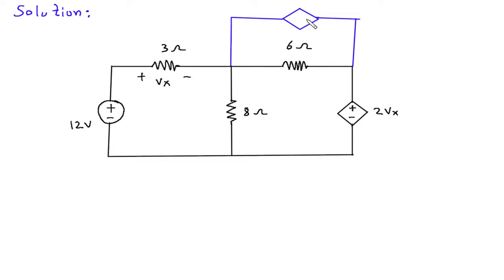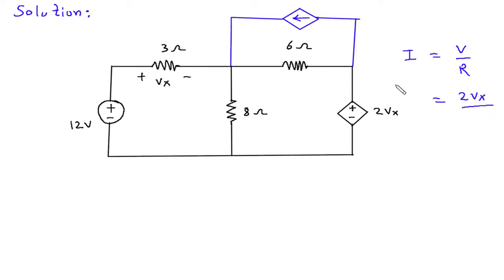The direction of this dependent current source will be like this. Now, as we know that I is equal to V divided by R. V is 2Vx and R is 6 ohm, so this will be 1/3 Vx.